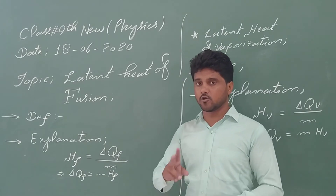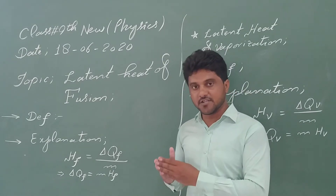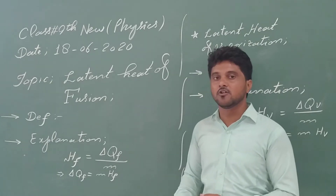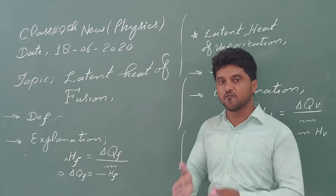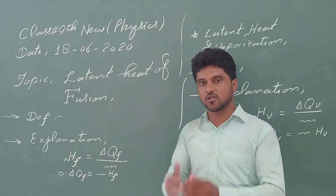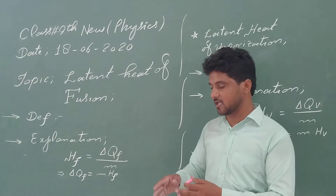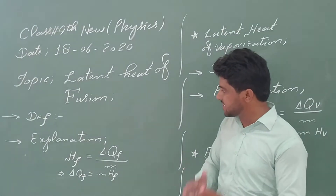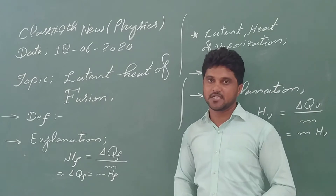We have key temperature points. One is the melting point — the temperature at which a solid starts to melt into liquid. Another is the freezing point — the temperature at which a liquid converts into a solid. And the third is the boiling point — the temperature at which a liquid starts to convert into a gaseous state.